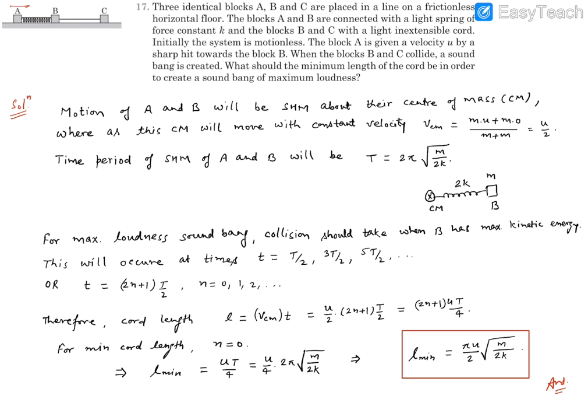First we are going to analyze the motion of A and B. Motion of A and B will be SHM with respect to their center of mass. Since A has been given velocity, and if we consider A and B together, the spring force is going to be an internal force. So center of mass will have a constant velocity, and the velocity of the center of mass is going to be U by 2 because both are of identical mass.